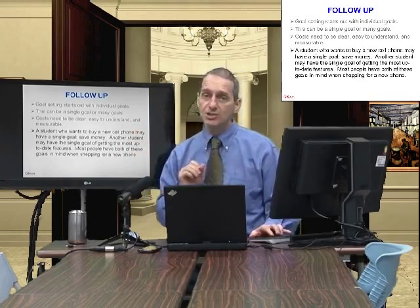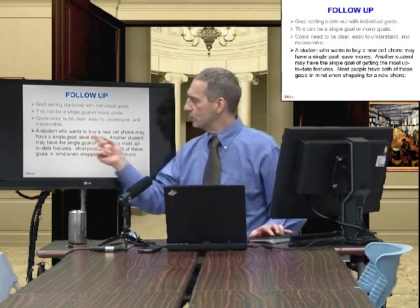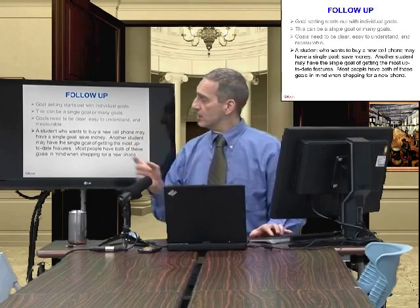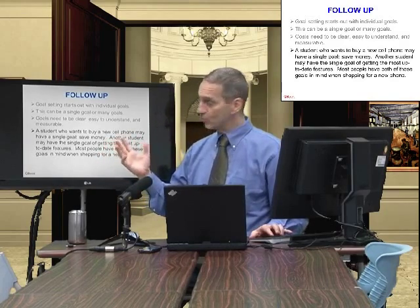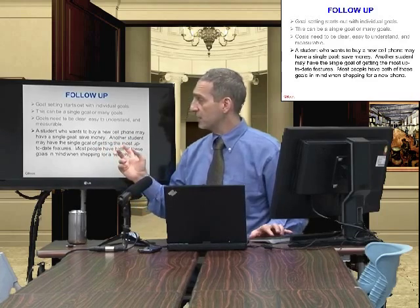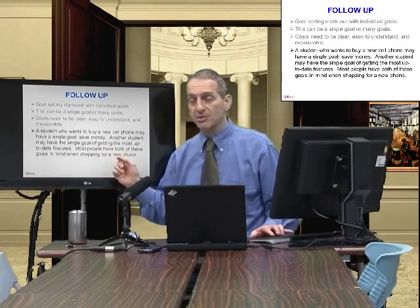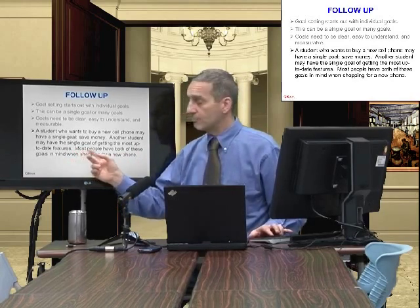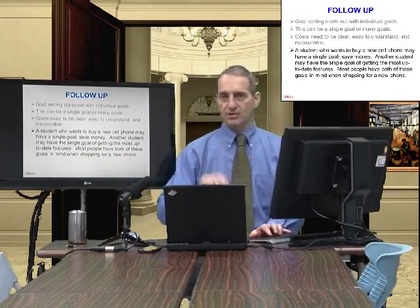They need to be measurable. The more measurable, the better. Take the student who wants to buy a new cell phone as an example. Let's say this student wants to save money because they're a student — they don't want to spend a lot of money. Another student may want to get the most up-to-date features. They're not really worried about money as much as they're worried about having the feature set. But in most people's cases, they're a combination of these.